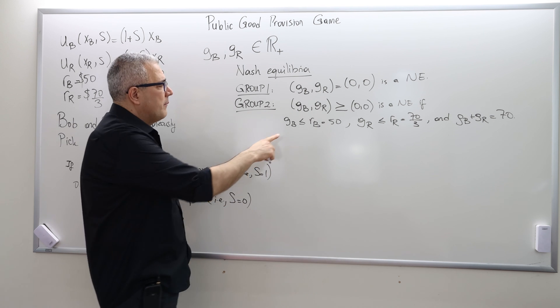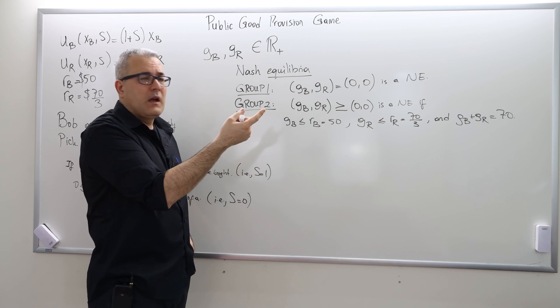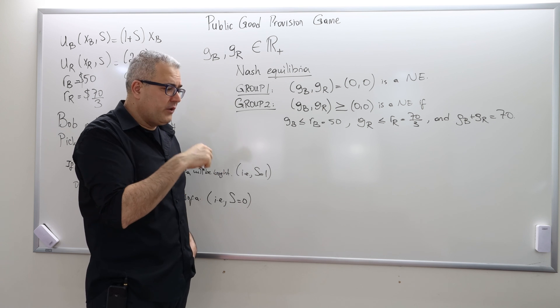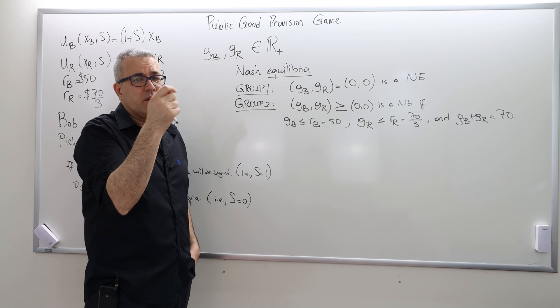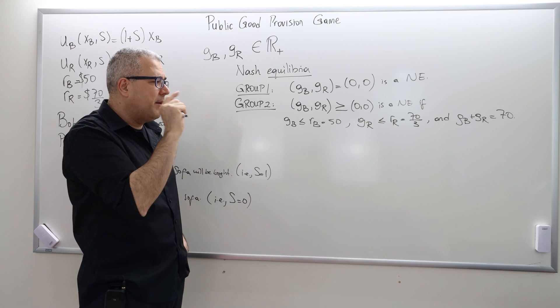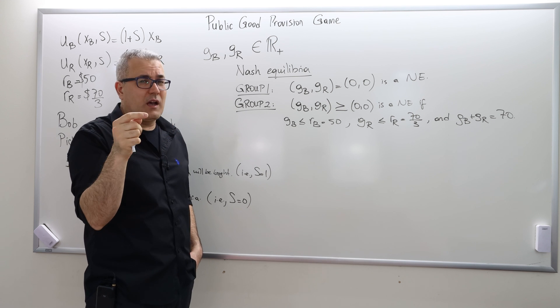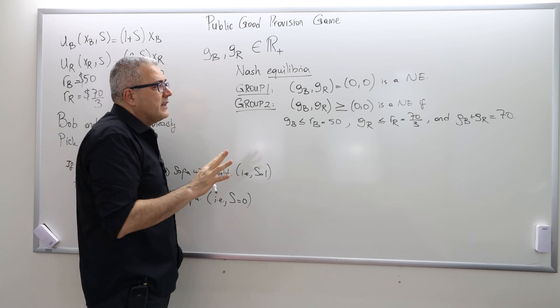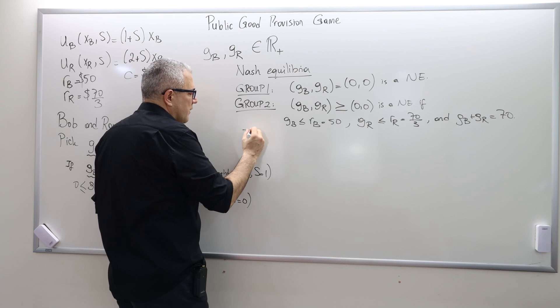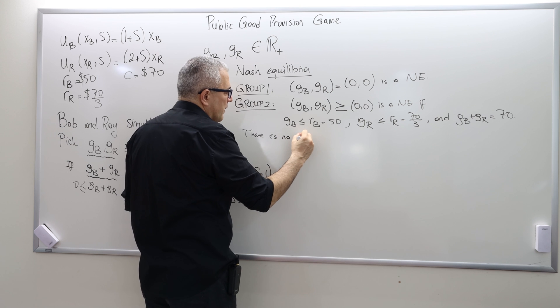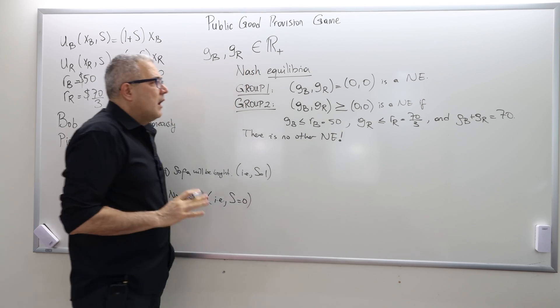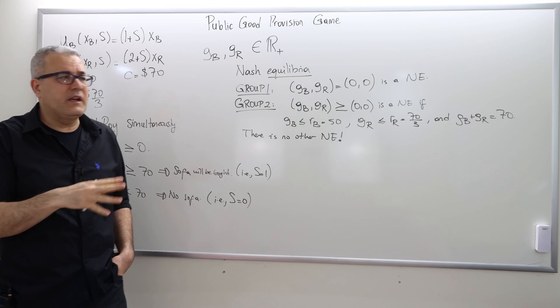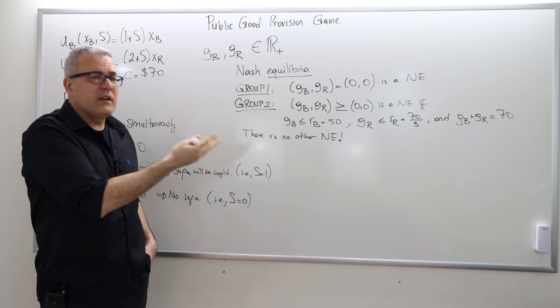So for example, Bob contributing $50, Ray contributing $20 is a Nash equilibrium. Bob contributing $51 and Ray contributing the rest. So once again, Bob contributing $49 and Ray contributing $21 is also Nash equilibrium. So there's in fact infinitely many possible Nash equilibria. And in fact that's it, there is no other Nash equilibrium. So I will try to convince you in a moment why these are Nash equilibrium, because it's important in an exam you have to show me why these are Nash equilibria.